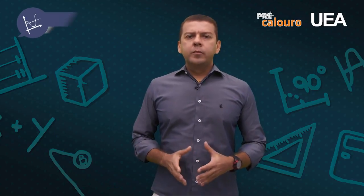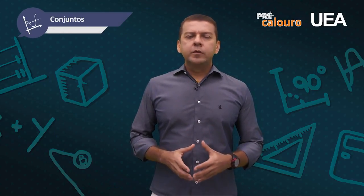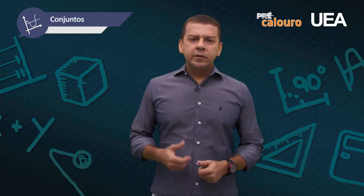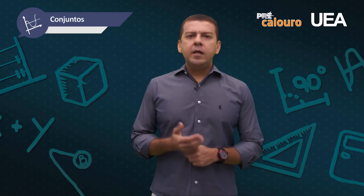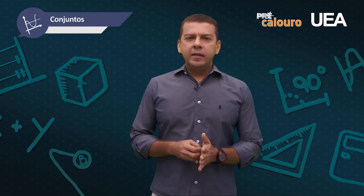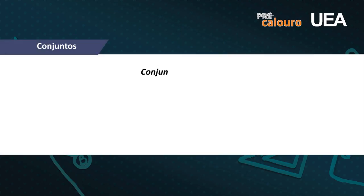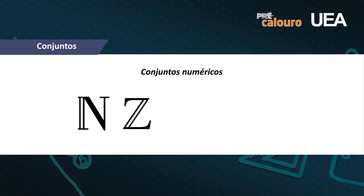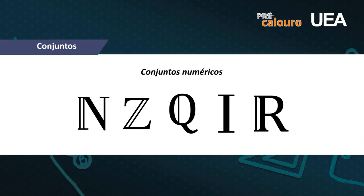Dentro dos conjuntos numéricos que iremos estudar estão os números naturais, os números inteiros, os números racionais, irracionais e os reais. Para facilitar, usaremos letras para representar esses conjuntos: os números naturais pela letra N, os inteiros pela letra Z, os racionais pela letra Q, os irracionais pela letra I, e o R representará os números reais.